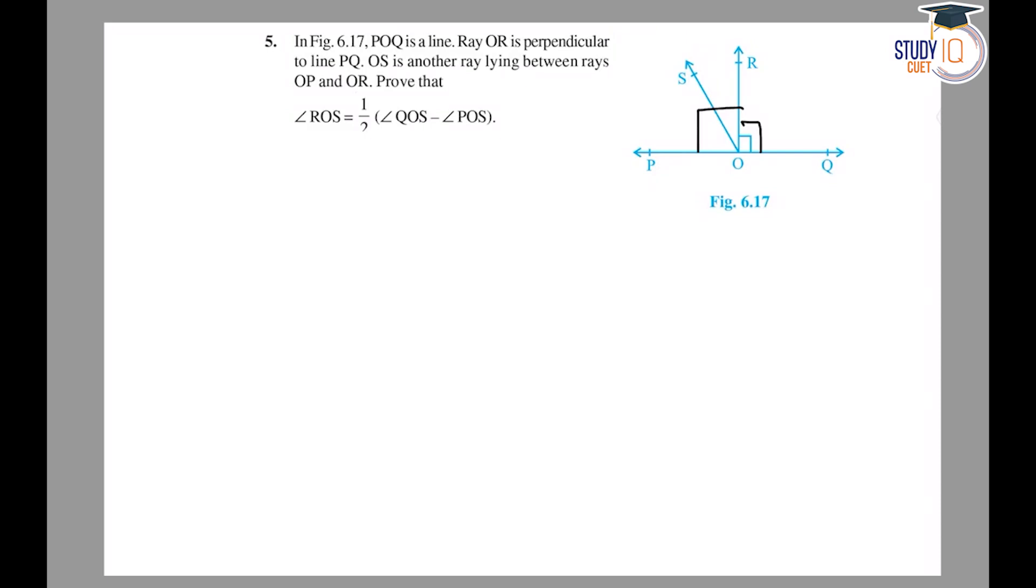OS is another line between rays OP and OR. Then we have to prove that angle ROS equals half of angle QOS minus angle POS.